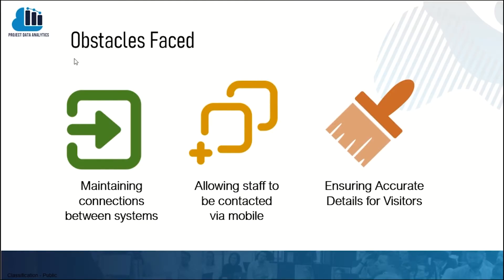Some of the obstacles that can be faced with the proposed flow include maintaining connection between systems. We propose contacting employees via email, so allowing staff to be contacted via mobile is also important. Additionally, due to human error, visitor details are entered as open text, so there may be an obstacle in ensuring we receive accurate information from visitors.